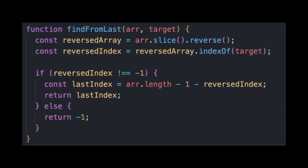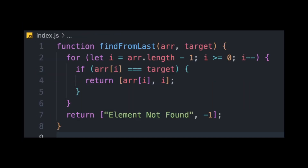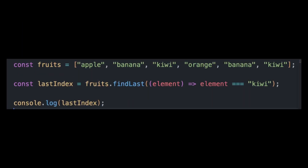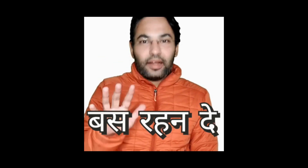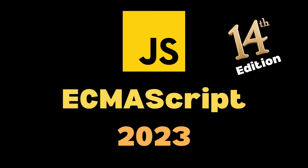Before ES14, if we wanted to find the last element or index in the array that satisfies some condition, we had to either reverse the array or use a loop that starts from the end. But now we have a method called findLast that will start from the end of the array and return the value of the first element that satisfies the condition. Similarly, we have a method called findLastIndex, which does the same thing but returns the index, not the element. These were the changes in JavaScript as ES14 in 2023.